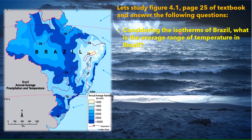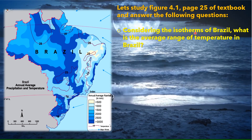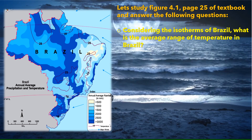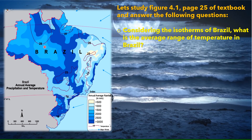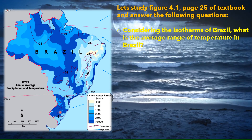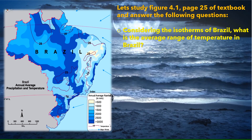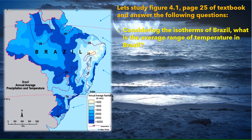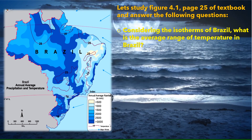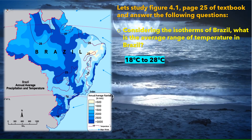Considering the isotherms of Brazil, what is the average range of temperature? First, let us recall what isotherms are — isotherms are lines joining places with the same temperature. On this map we can see isotherms at 18°C, 23°C, and 28°C. The average range of temperature in Brazil is between 18°C and 28°C.